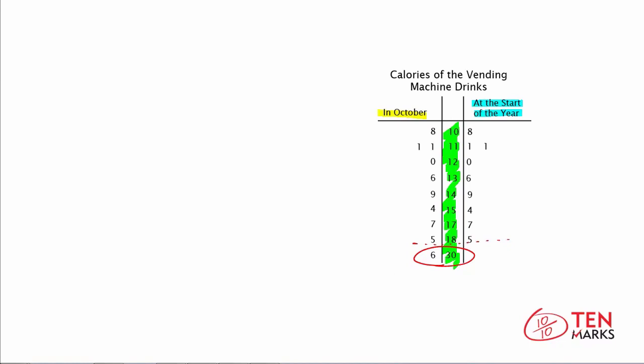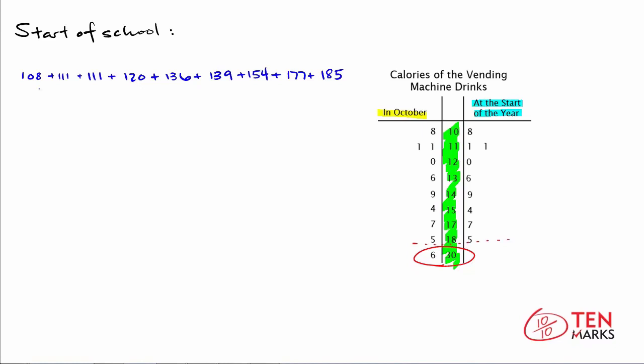We're going to compare these two data sets and begin finding the mean, median, and mode of each set, investigating how the additional point in October affects these measures of central tendency. Let's start with the information from the start of the school year. To find the mean, I've taken all of the data values from the right-hand leaf and written them out as a large addition sentence. You add all the data values together and divide by the total number of data points. Adding them all gives a sum of 1,241. There are nine data values, so we divide by nine and get 137.9 calories as the mean.